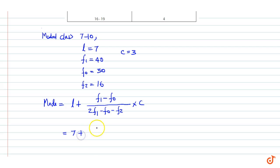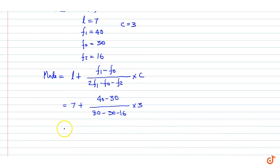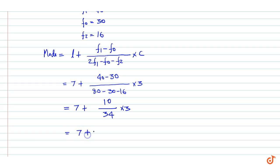Substituting: Mode = 7 + (40 − 30) / (80 − 30 − 16) × 3 = 7 + 10/34 × 3 = 7.88. That is our modal number of letters in the surnames.